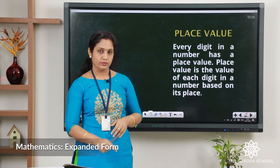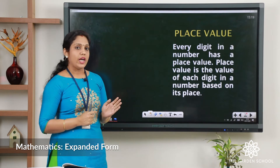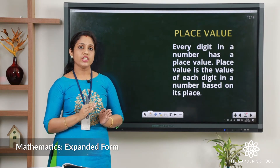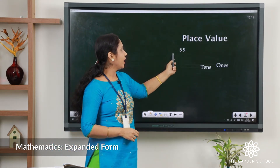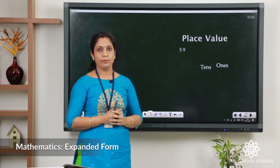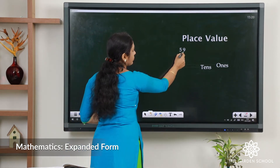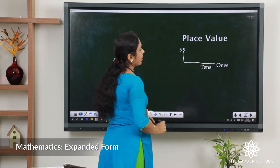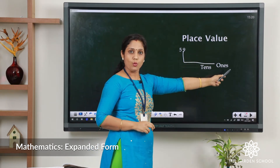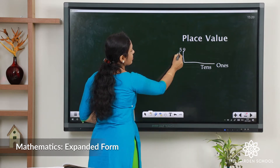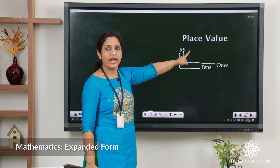What is place value? Every digit in a number has a place value. Place value is the value of the digit, and it changes according to the position of the digit. For example, the number 59 is a two-digit number. Here there are nine ones and five tens. Nine comes in the ones position, five comes in the tens position. So we can say five tens and nine ones.